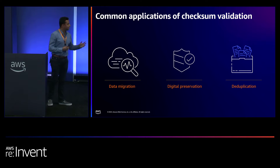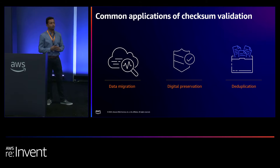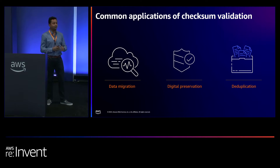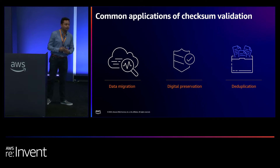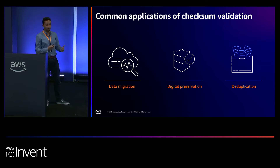Finally, I also wanted to talk about deduplication. Imagine you have an S3 bucket with millions of objects and multiple users creating copies of your data. Where you want to cost optimize, you can use checksums to identify duplicates and delete them altogether.